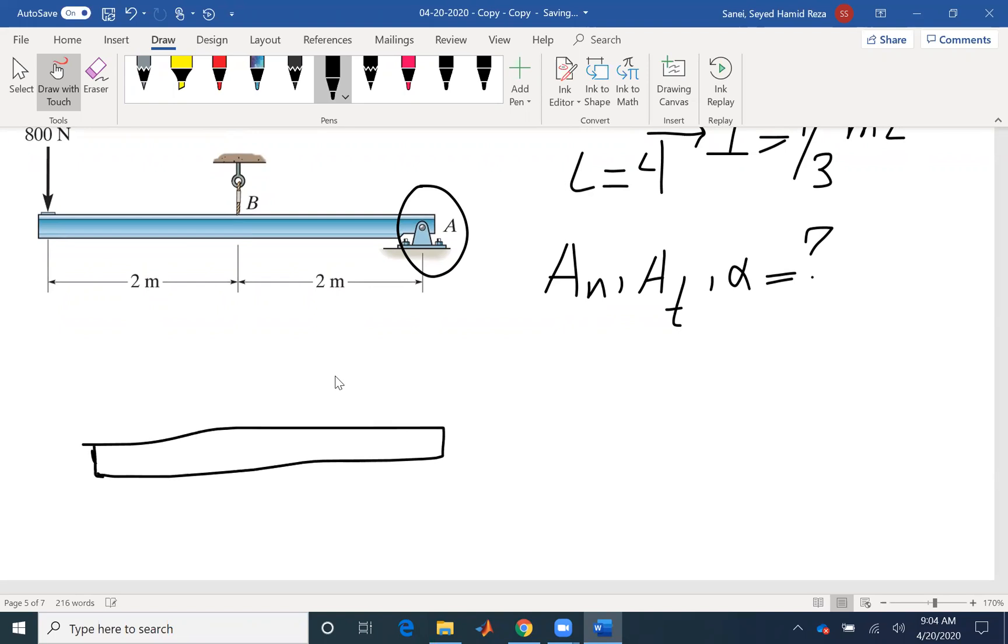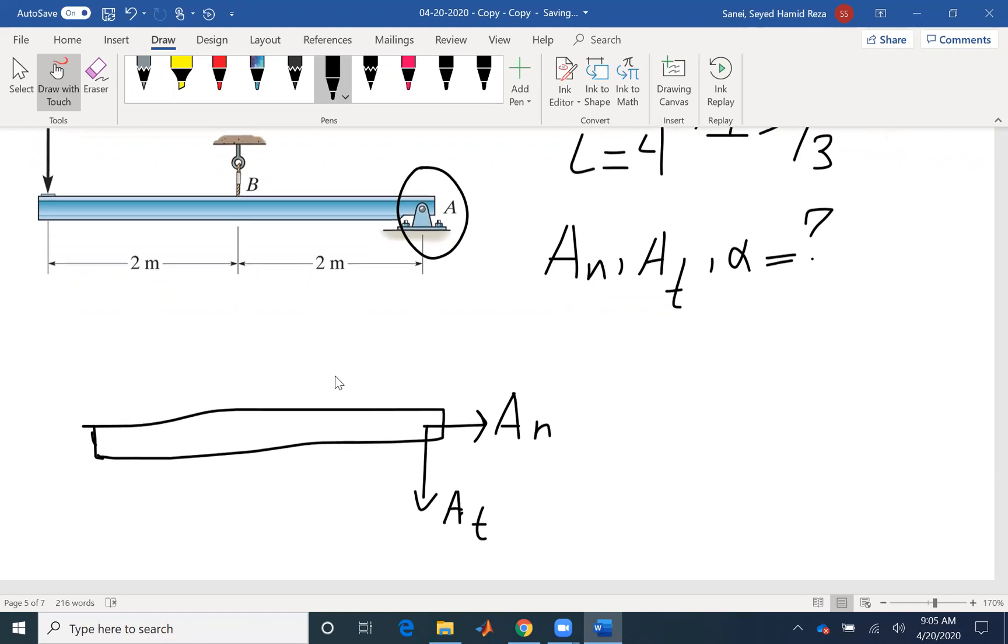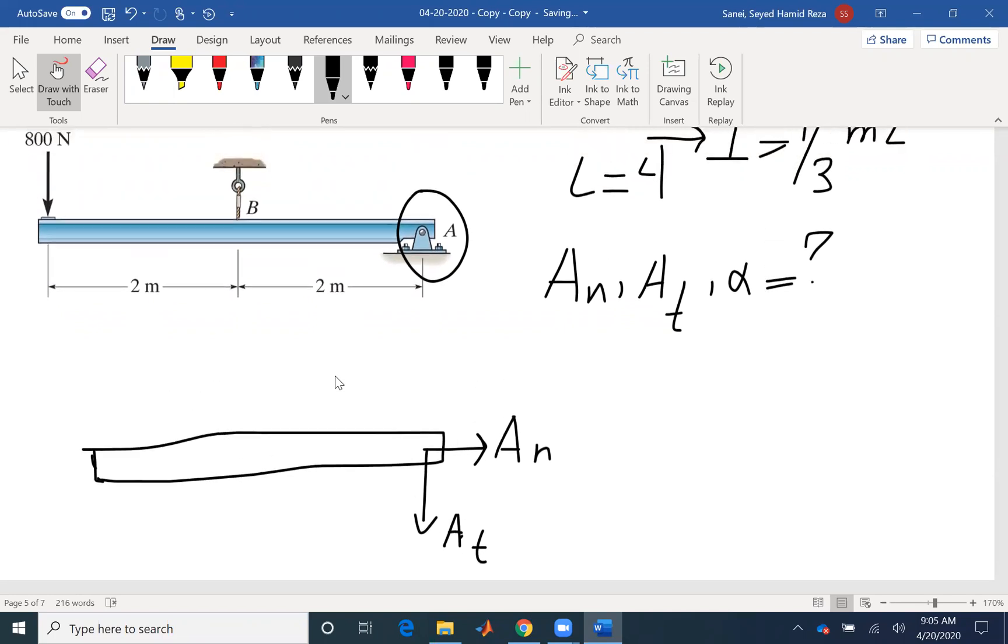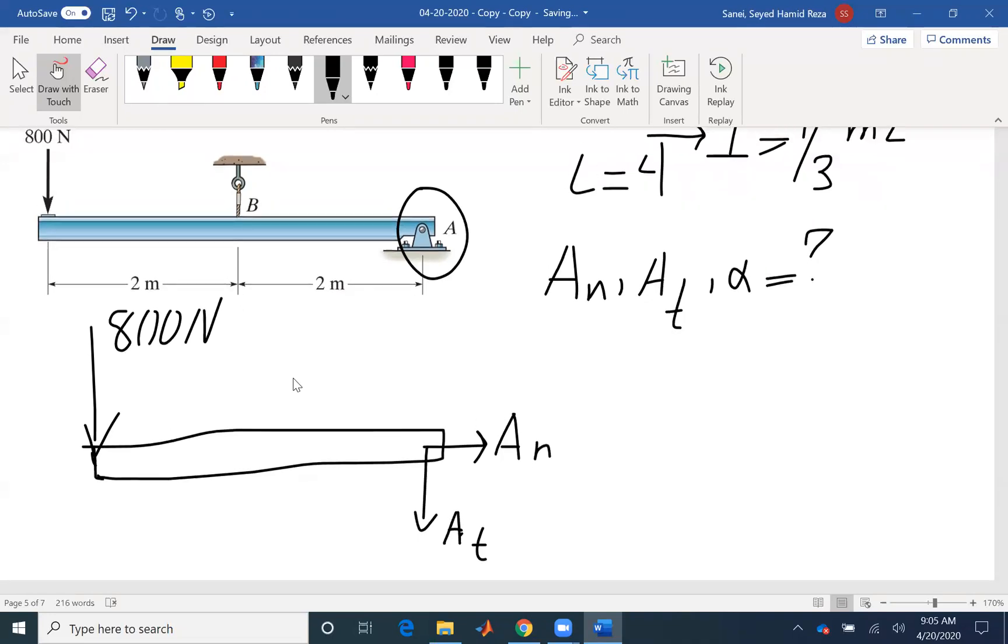I can draw straight lines. I have A_N and A_T. Again, the direction, you can assume the direction. If you find a negative value, your assumption is incorrect. But if you have visual inspection, you can see that A_T is going to provide us the tangential acceleration. And you can draw the correct direction from the very beginning. I have 800 newtons.